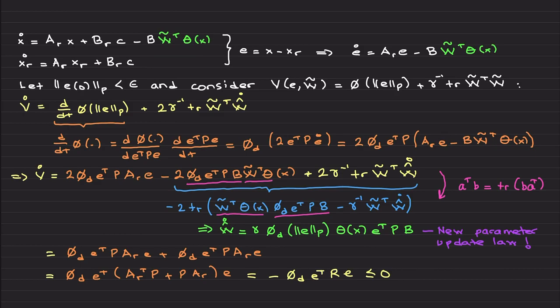Then let's consider this energy function containing the Lyapunov barrier function that we just defined plus the weight estimation error. Now I am differentiating it. We need to take derivative of this phi function, so I am writing this derivative as d phi over de transpose times P times de transpose dt. This is exactly where we are using the phi_d, the derivative of this Lyapunov barrier function. And this is standard: 2e transpose P e dot. When you insert e dot here, you can easily come up with this expression.